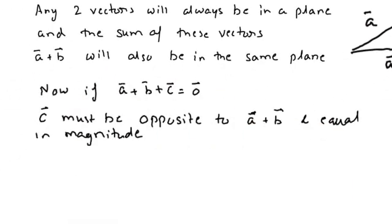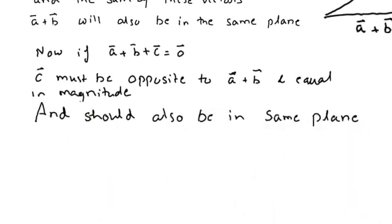Now, if A vector plus B vector plus C vector is equal to zero, C must be opposite to A vector plus B vector, equal in magnitude, and should also be in the same plane. Thus, the three vectors must be in the same plane if their sum is to be equal to zero.